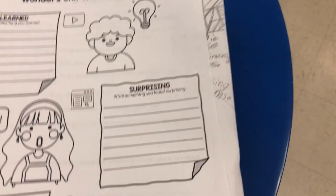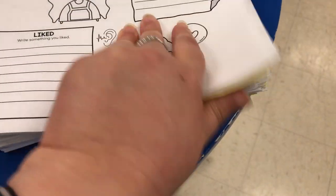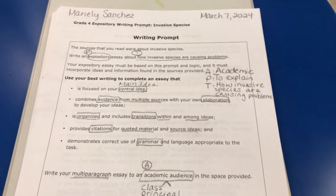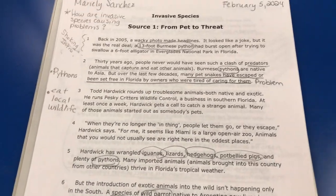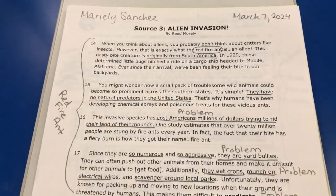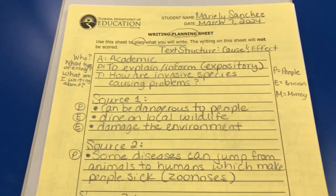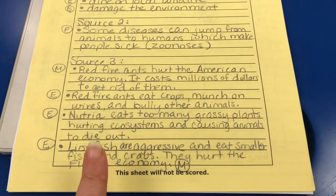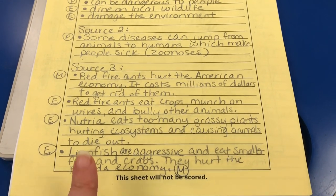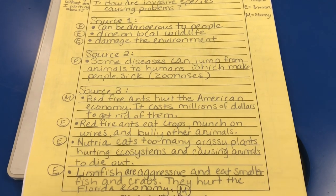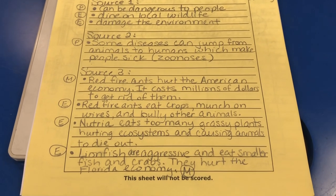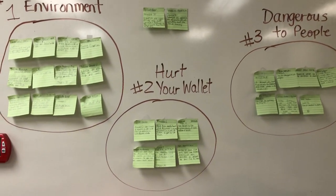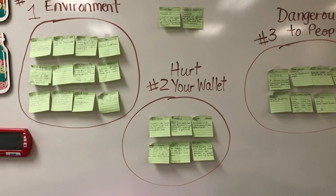Now for our writing — all their papers are here. We reviewed the prompt and went over what we read in the sources — source one, source two, source three — and reviewed the notes we had taken. I had students write one of the invasive species problems on a sticky note, similar to what I did with block two earlier this week. All students put their notes on the board and I showed them how to group similar details together.